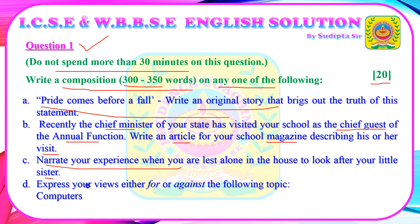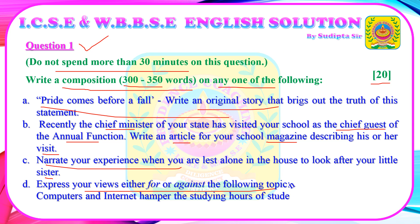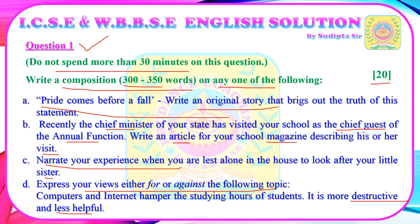Topic 4: Express your views either for or against the following statement — "Computers and internet hamper the studying hours of students; it is more destructive and less helpful." If you choose this argumentative topic, you need to write either for or against it, elaborating how computers and internet are harmful for students or how they are less helpful and destroying the serious studying hours of students.